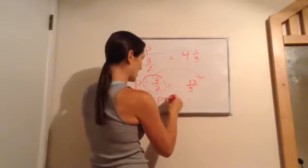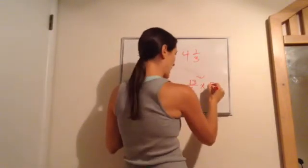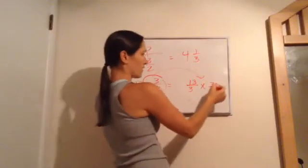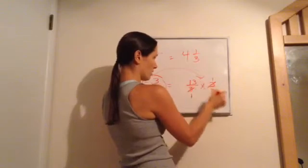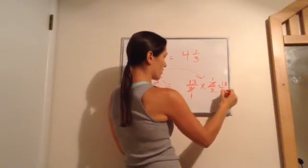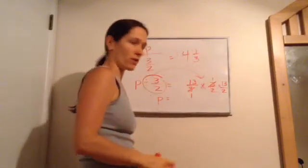So, P equals, and then this is instead of divided by 3 halves, it's going to be times 3 halves. Good. Now, this 3 and this 3 can cancel out. Yep. 1 and 1. And that's it. That's 13 over 2. It becomes 13 over 2. And that is the final answer. Lesson 24. Okay.